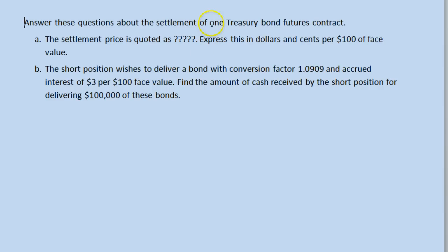This says: answer these questions about the settlement of one Treasury bond futures contract. The settlement price is quoted as something-something-something. Express this in dollars and cents per $100 of face value. So one thing you may need to do is take a quote, which in a homework assignment would probably just be given to you, and say what that means in terms of dollars and cents. So it's asking you if you can read a quote.